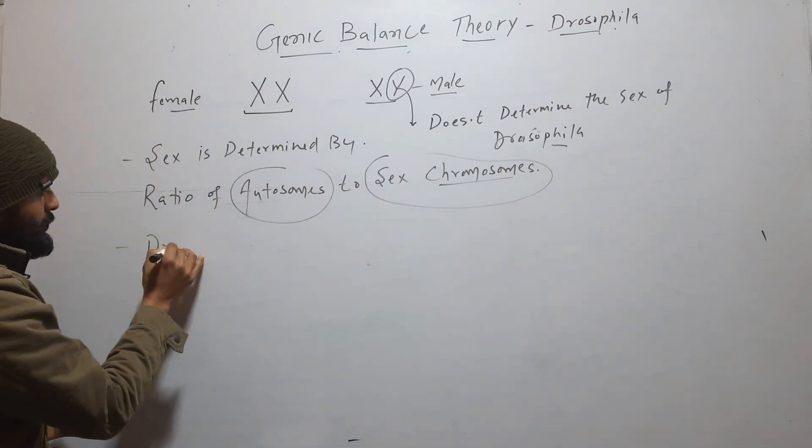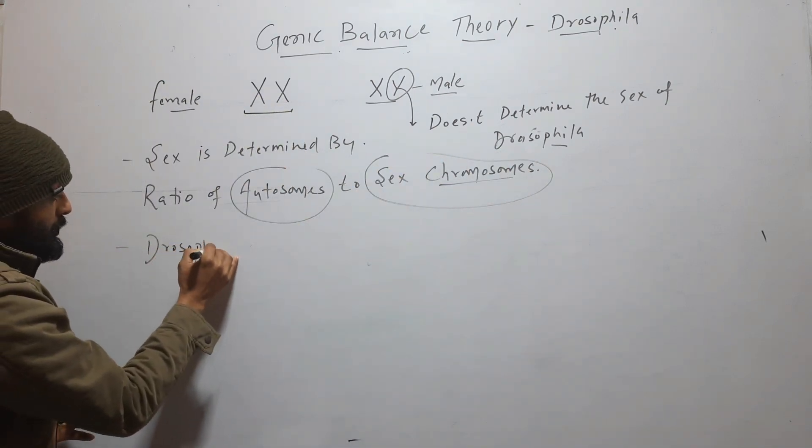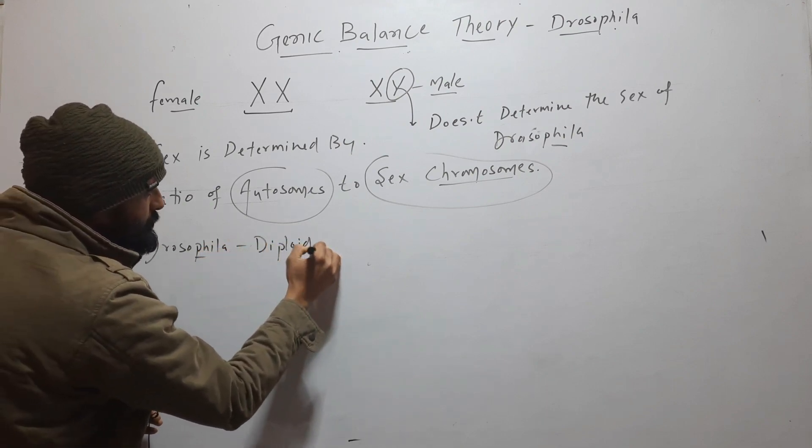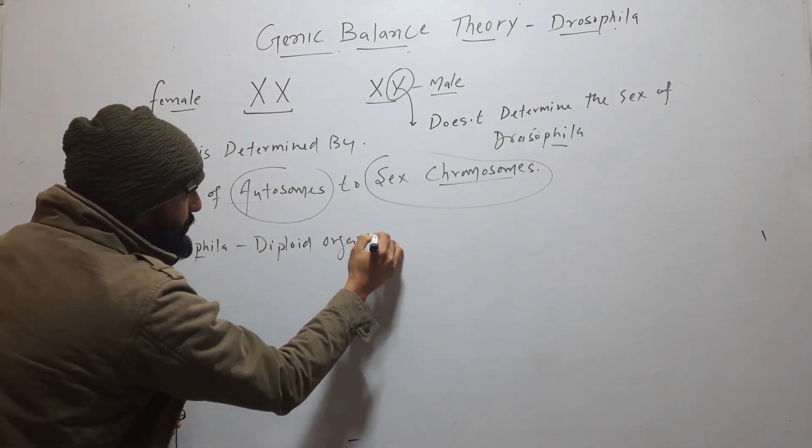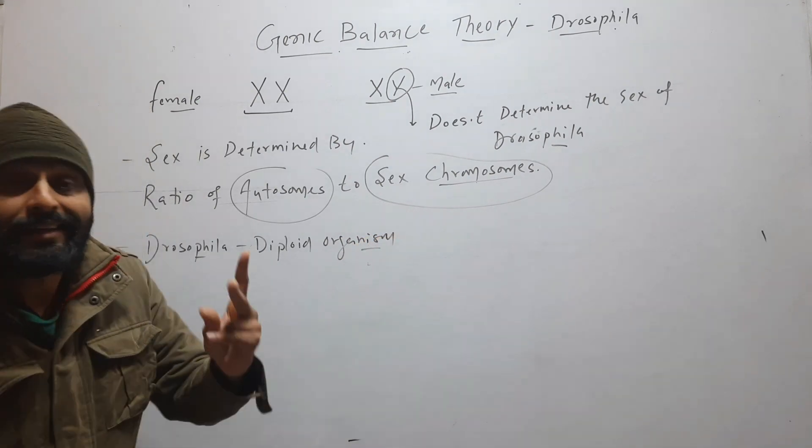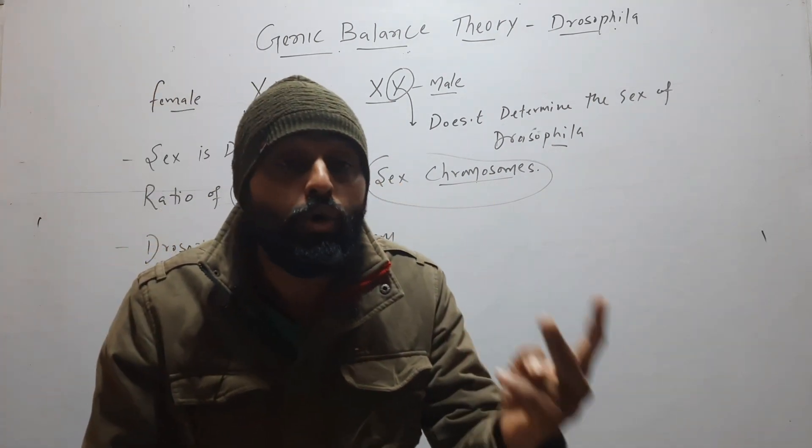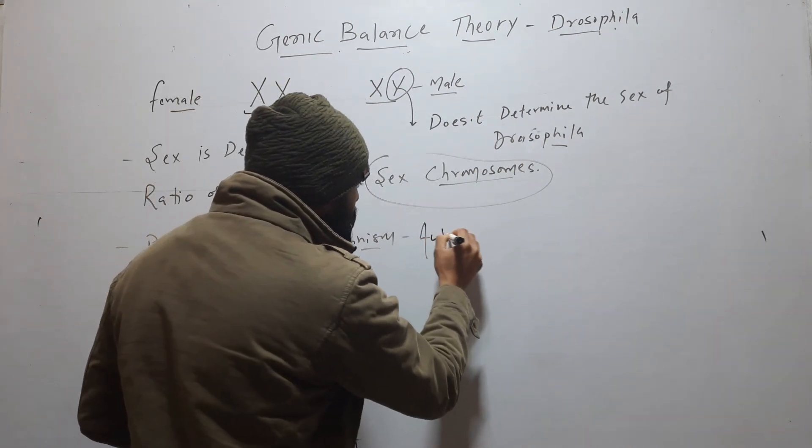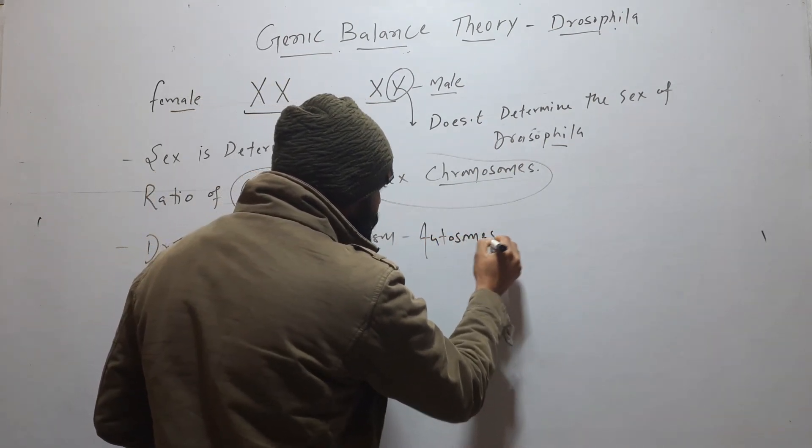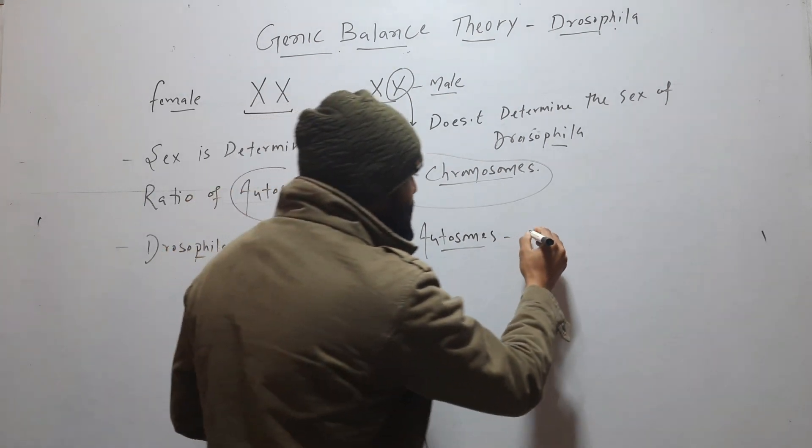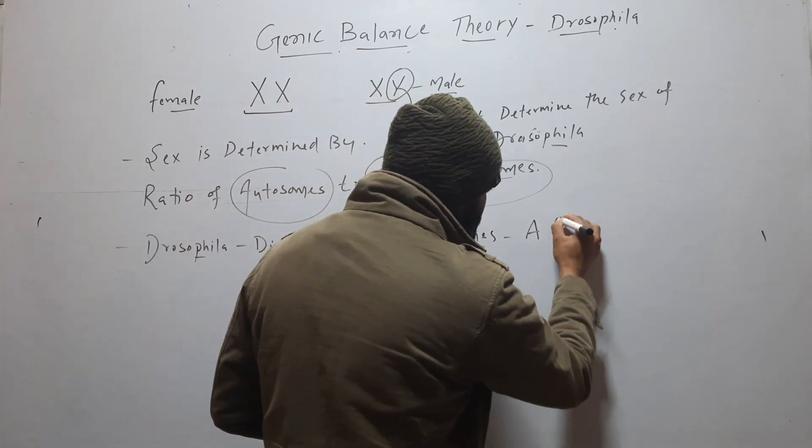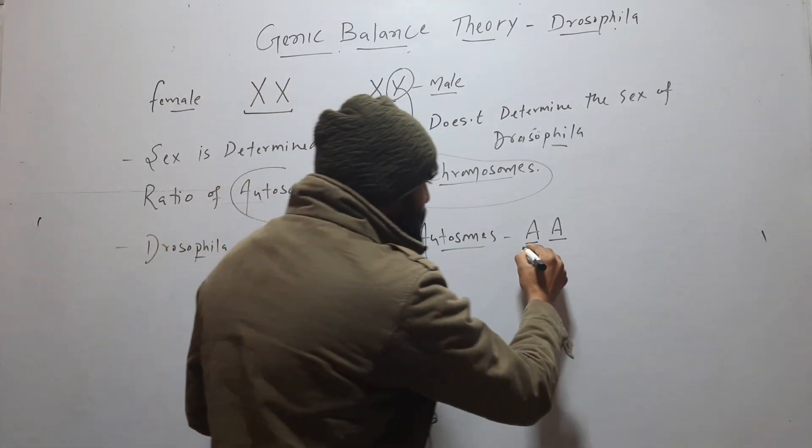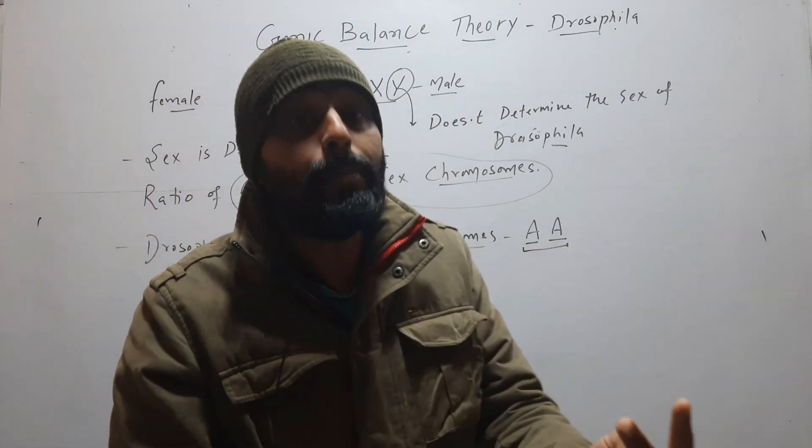Drosophila is diploid organism. If it is diploid, then it have two set of chromosomes. In case of autosomes, it have two sets. We can write it like A and A. It have two homologous chromosomes, two pair of autosomes.